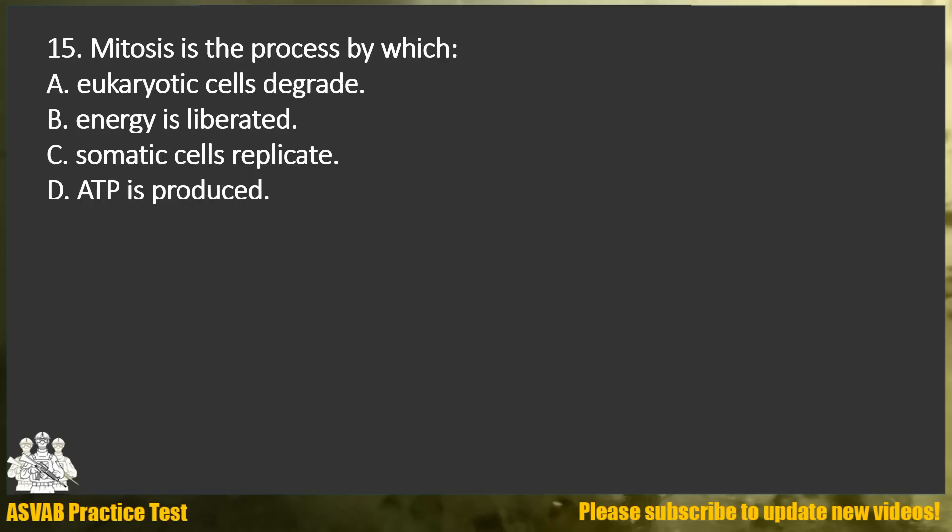Question 15. Mitosis is the process by which: A. Osmoticotic cells degrade. B. Energy is liberated. C. Somatic cells replicate. D. ATP is produced.